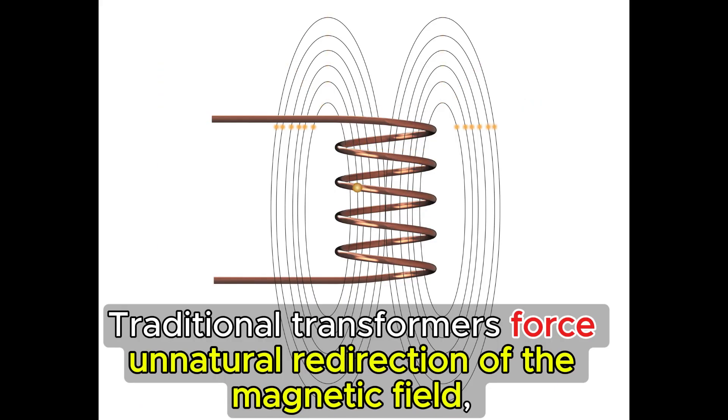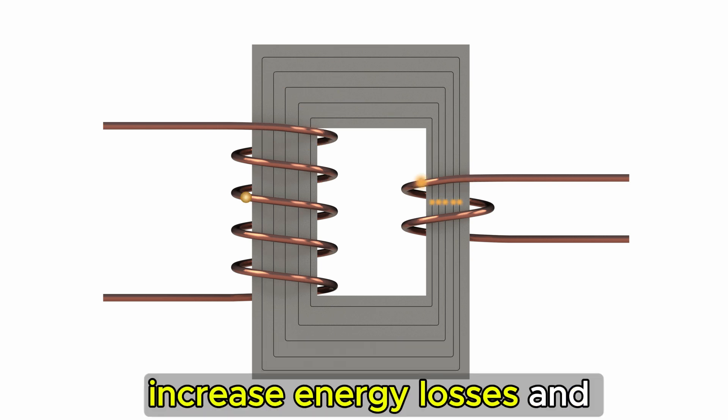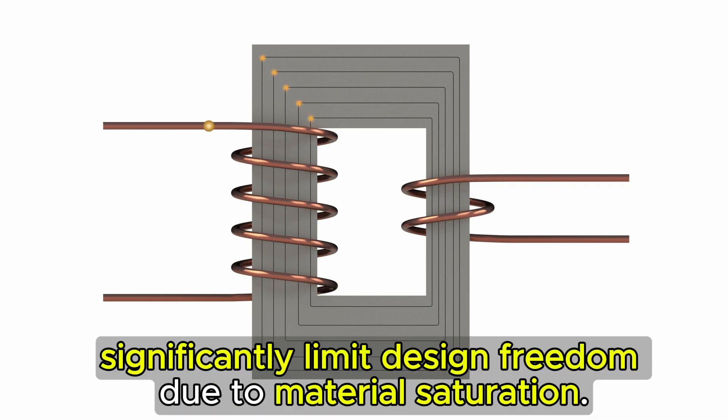Traditional transformers force unnatural redirection of the magnetic field into cores with low magnetic resistance that reduce performance, increase energy losses, and significantly limit design freedom due to material saturation.